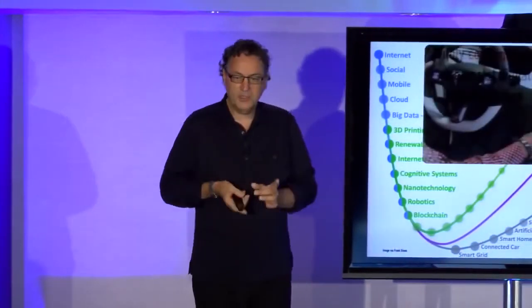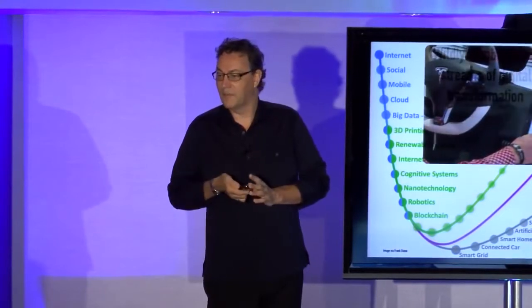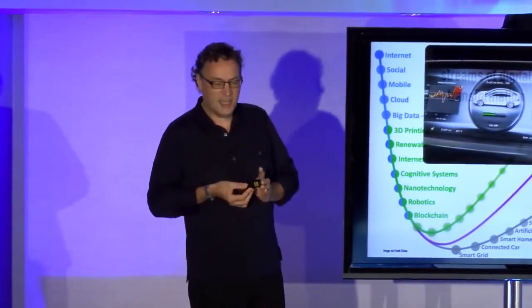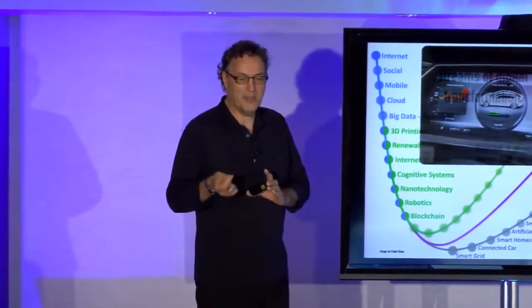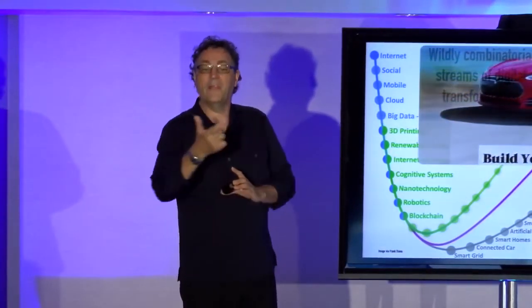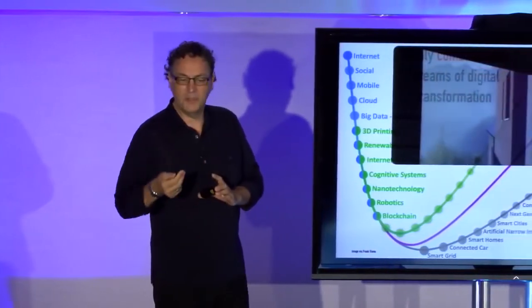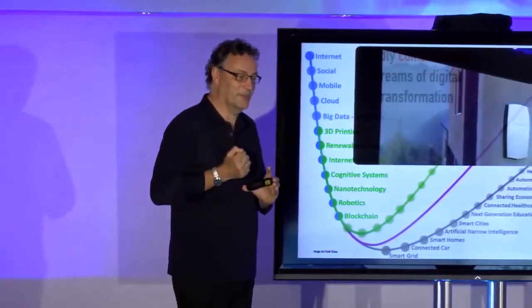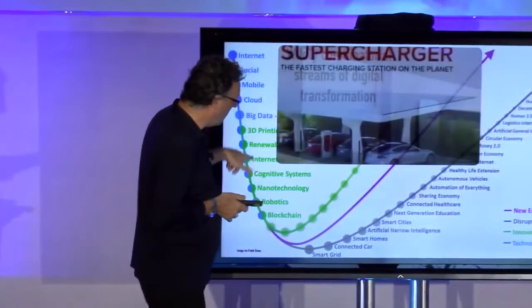The company that really knows how to do this was mentioned earlier is Tesla. I mean Tesla is the combinatorial company by definition. They're not a car company. They are a mobility company. They are an energy company. They're in the solar business. They want to redo our grid. They're actually in all of those businesses.